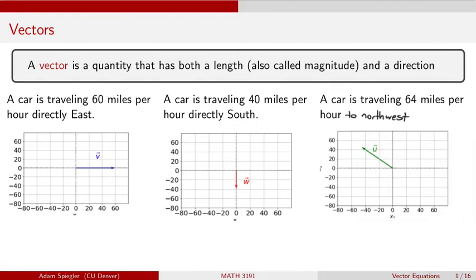For this last example, going 64 miles to the northwest, we would want to draw a vector here which has length 64 units, and this is directly pointing to the northwest.